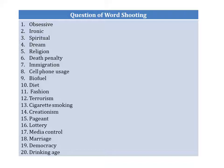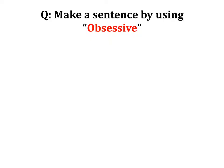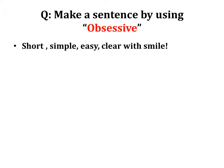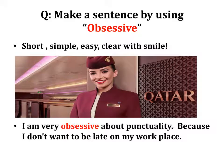These are the question list of word shooting that applicants got recently. Number one is 'obsessive.' The interviewer gives you a question like 'Make a sentence using obsessive.' So how can you make a sentence with this word? You need to know the actual meaning. When you make a sentence, make it short, simple, easy, and clear with a smile. For example: 'I am very obsessive about punctuality because I don't want to be late at my workplace.' Simple and easy.